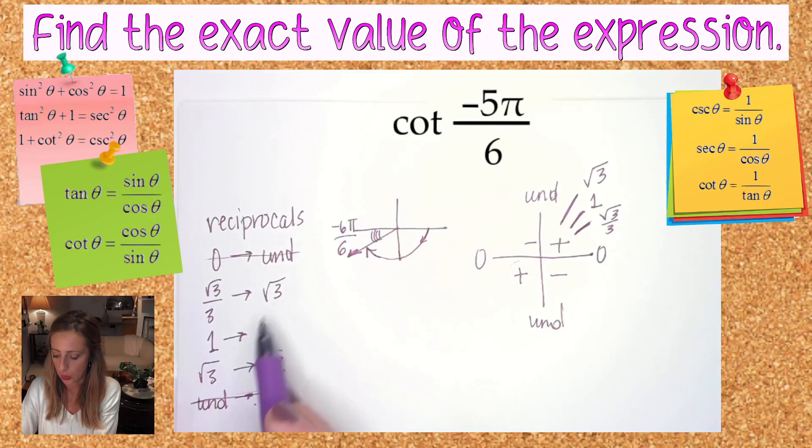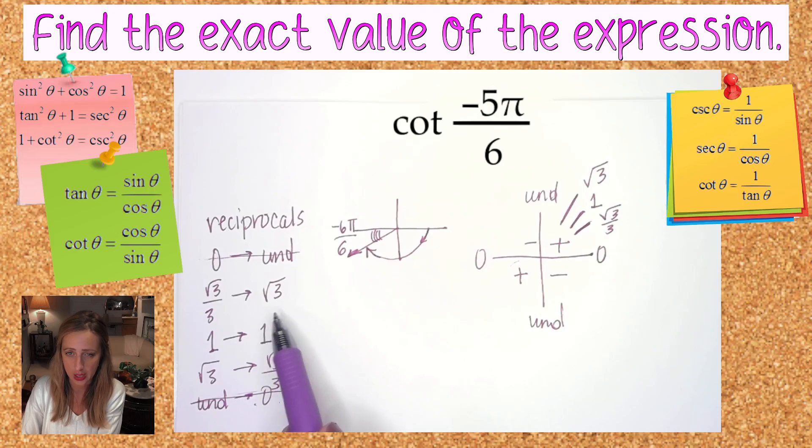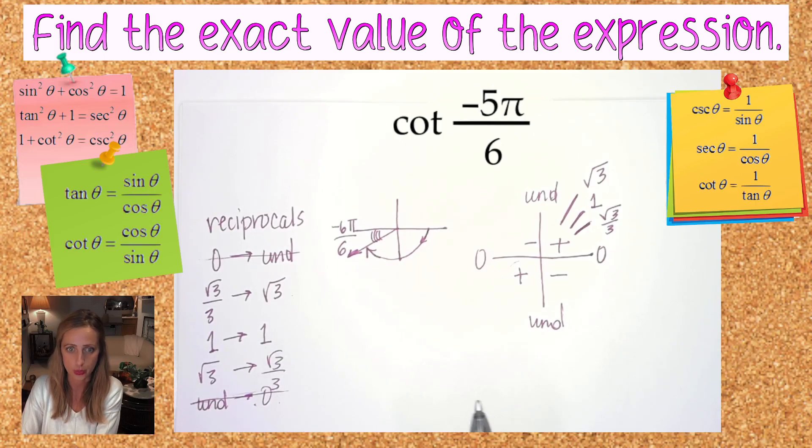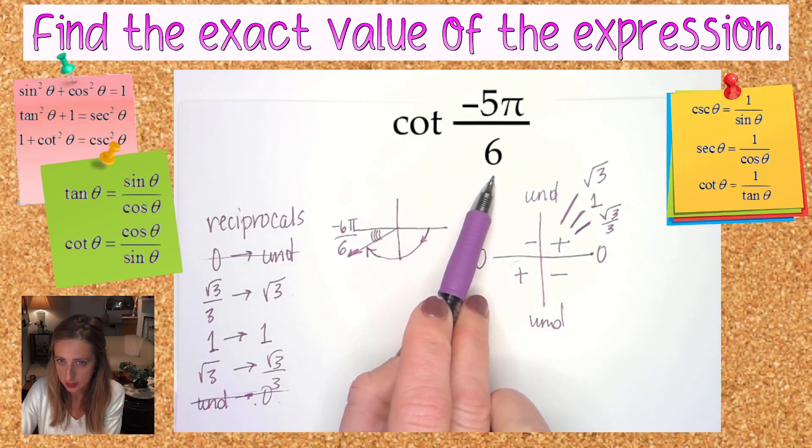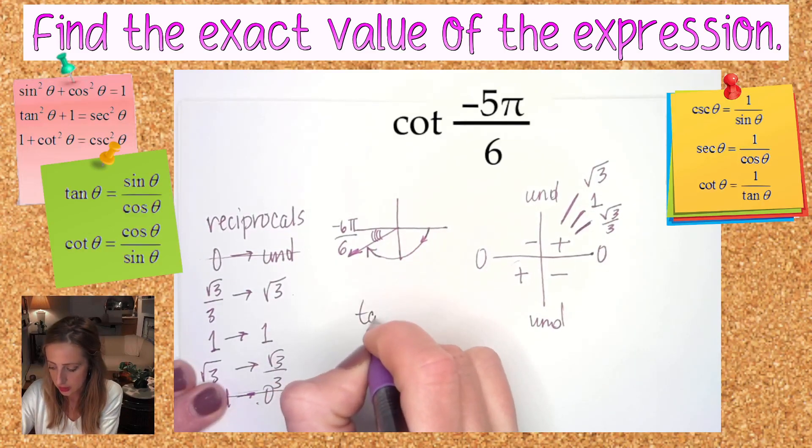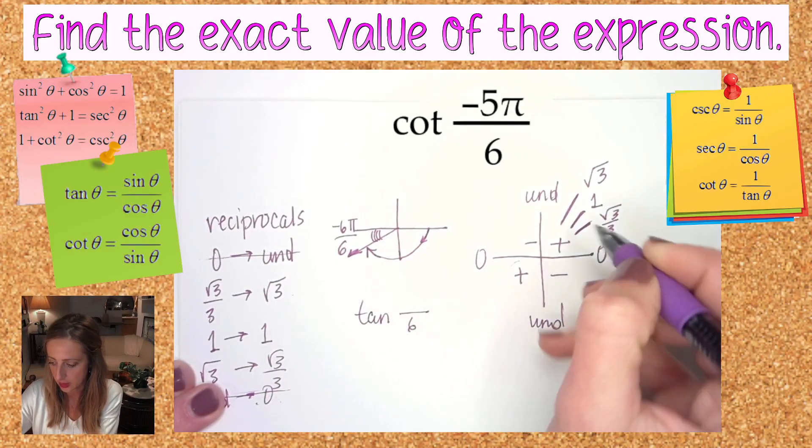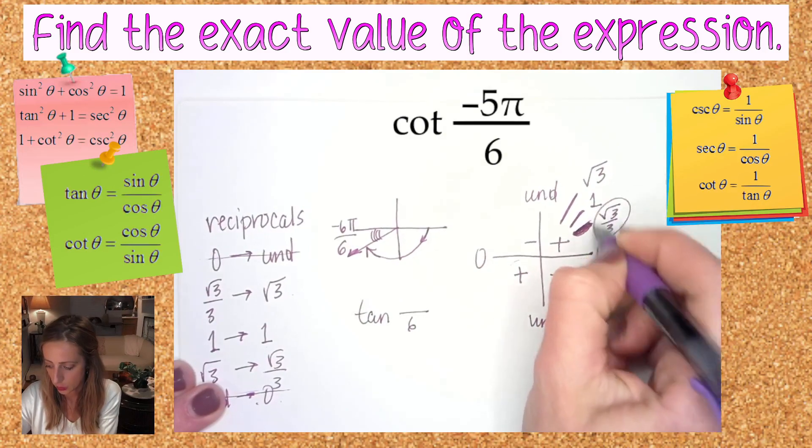If you guess out of the clear blue sky, it's either √3, 1, or √3 over 3 positive—one of those, right? If it's at 5π over 6, the tangent of any angle over 6 is √3 over 3.